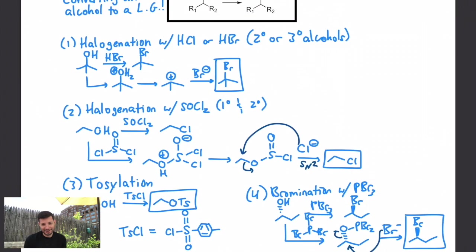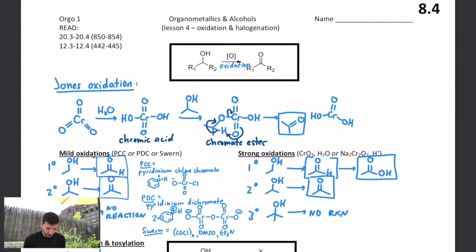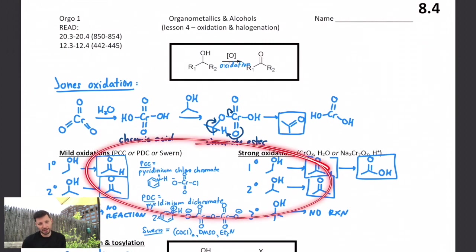Okay, so, lots of different reactions to use today. How do you take alcohols and turn them into leaving groups? Or, how do you take alcohols and turn them into carbonyl compounds? Those both qualify as oxidation. They'll be very useful in synthesis problems.